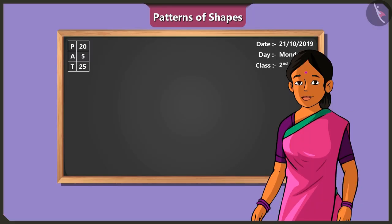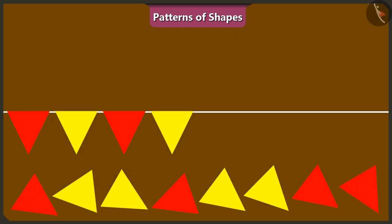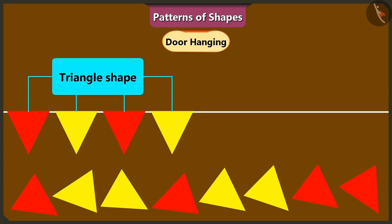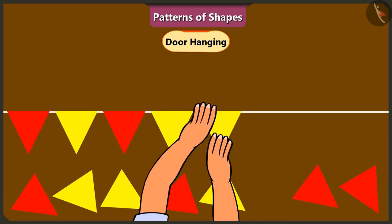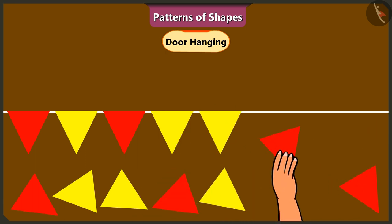Absolutely correct. See this. I have a toran or a decorative door hanging in the shape of a triangle. Vinny and Binny, both of you will complete this toran in this pattern. Yes, ma'am. Vinny, keep putting glue on the triangles and I will keep pasting them like this. Okay. Alright.